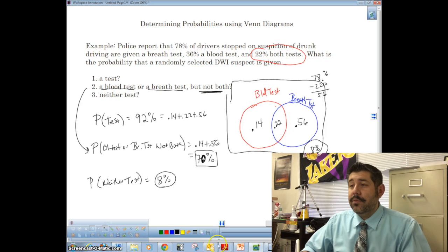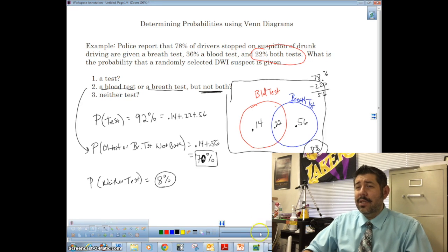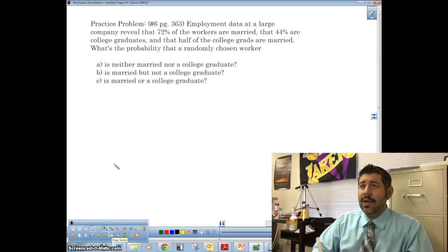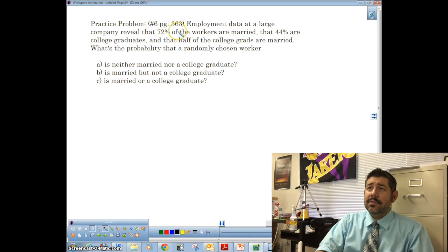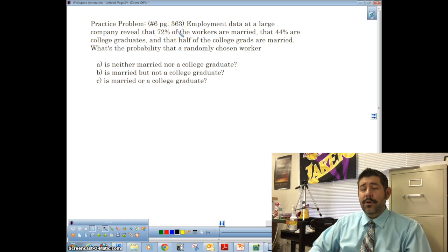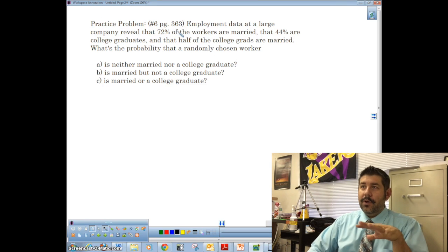All right. So let's take a look at another example of using a Venn diagram. And actually, it's not really examples of practice problems. So why don't you try this on your own? If you want to know if you have your book with you, this is number six on page 363 in the BVD book. The BVD stands for Bach, Bell, and DeVoe.